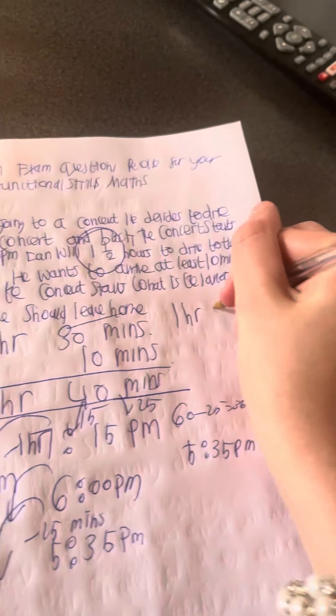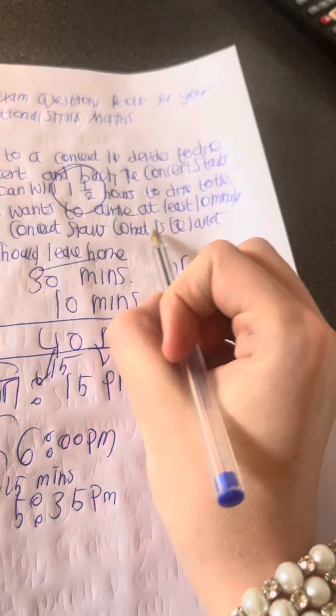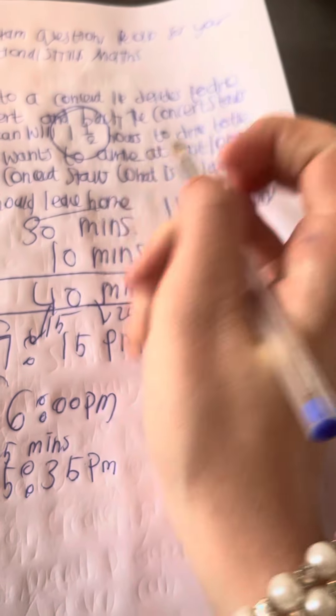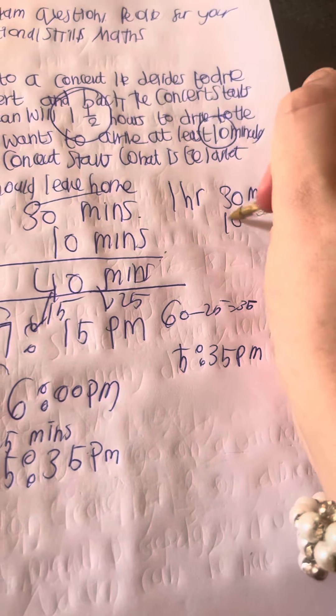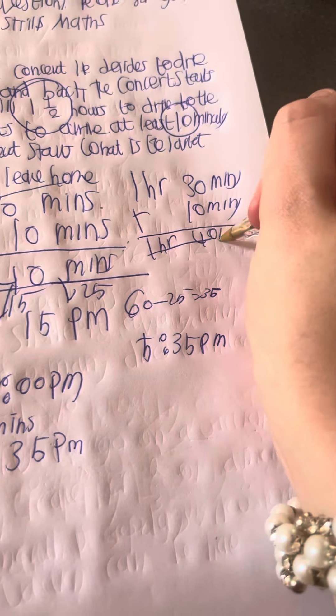So we know that one and a half hours is one hour and thirty minutes. The question says he wants to be there ten minutes early. So if we add ten minutes, that gives us how long it would take, which is one hour and forty minutes.